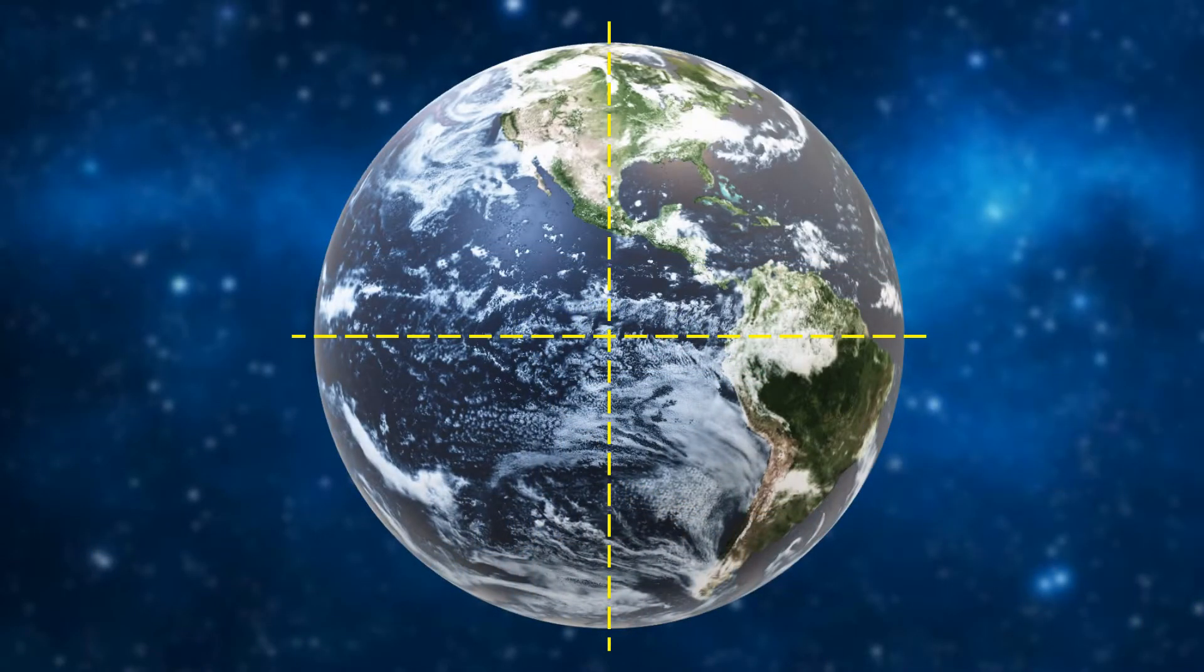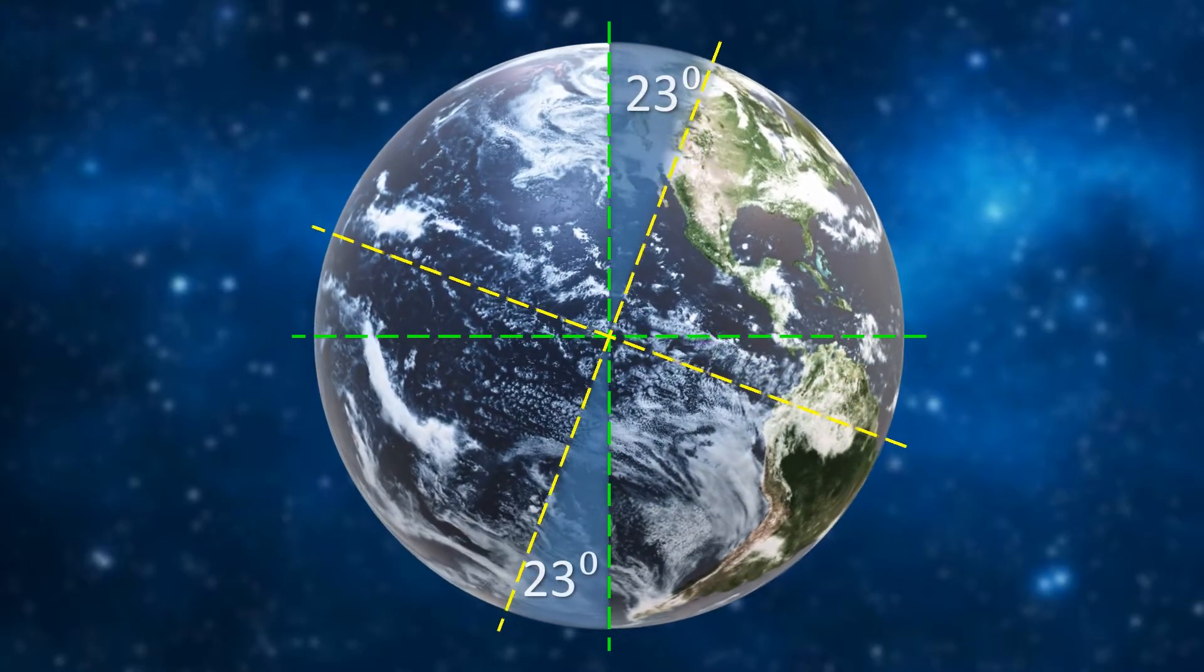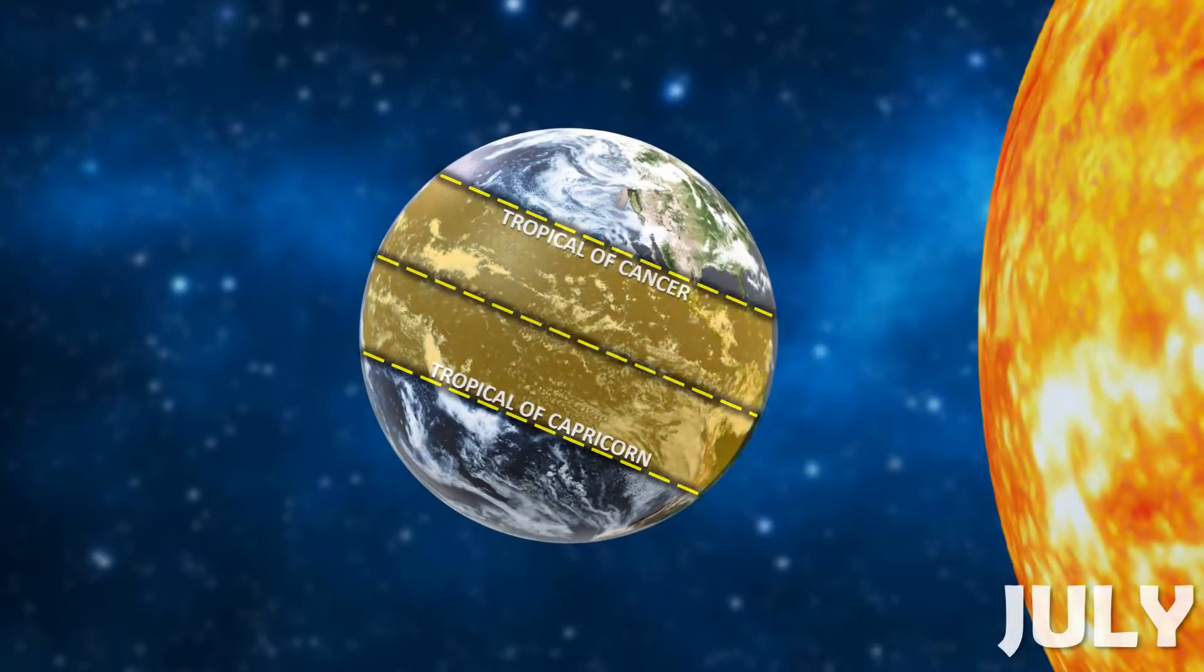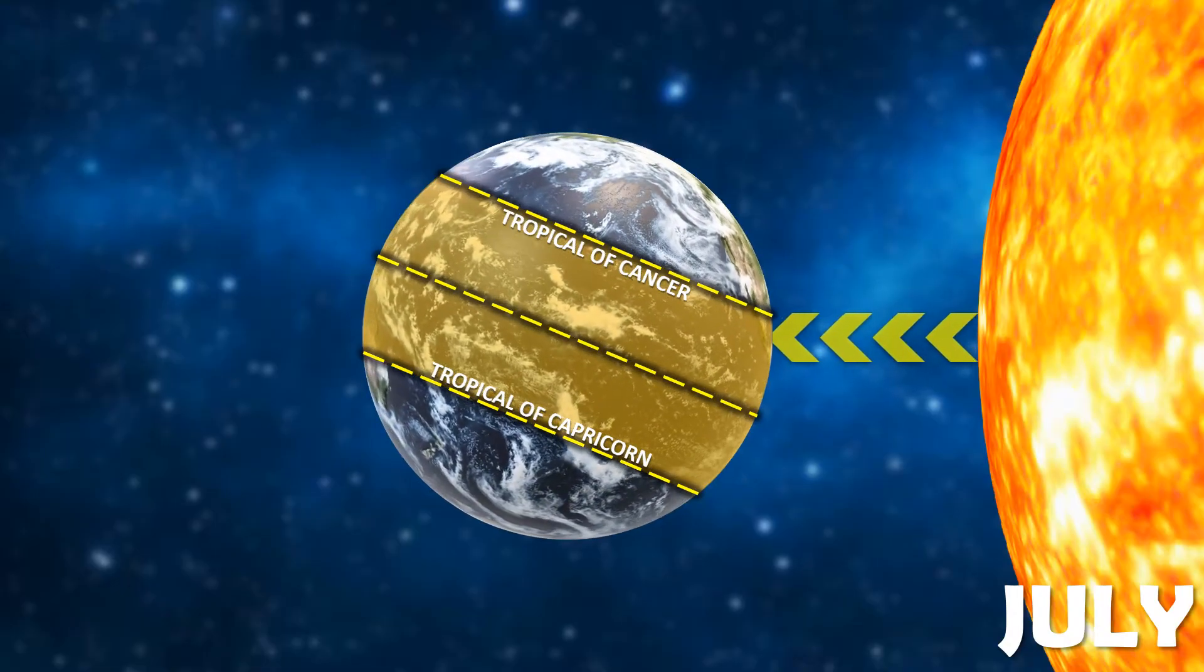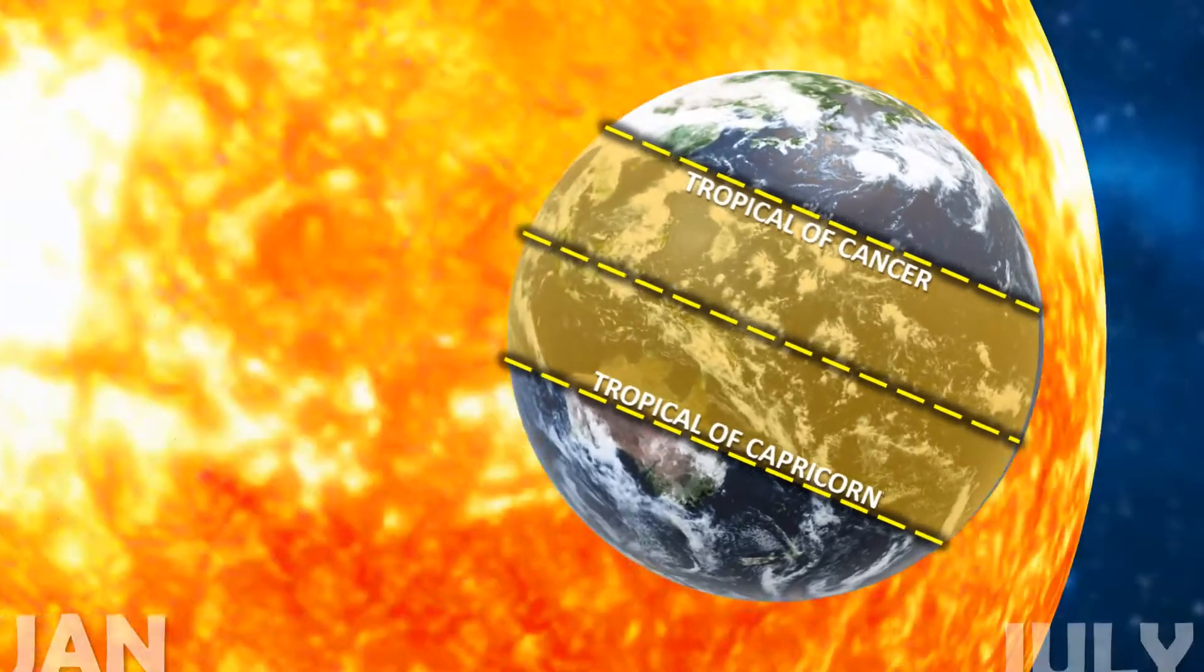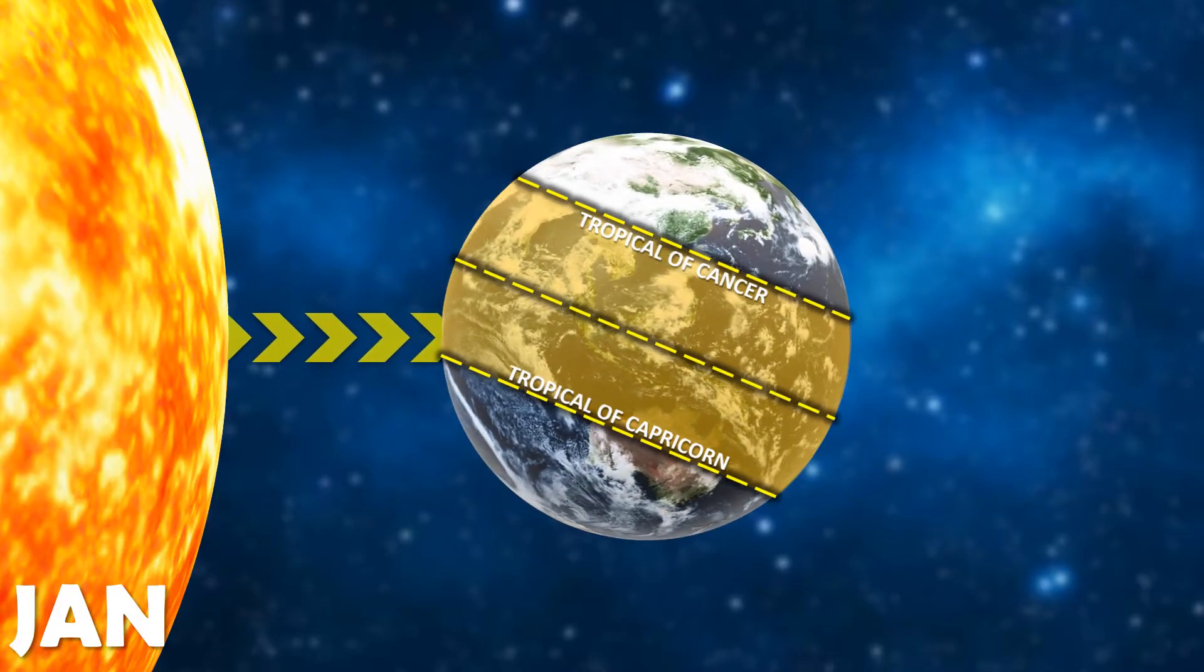Now, let's add a splash of realism by adding Earth's 23-degree tilt. With this tilt, you'll notice that the Tropic of Cancer receives more direct sunlight during the month of July, whereas the Tropic of Capricorn receives more direct sunlight during the month of January.